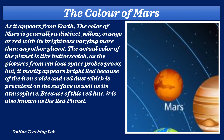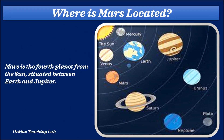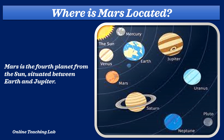Because of this red hue, it is also known as the red planet. Mars is the fourth planet from the sun, situated between Earth and Jupiter. As you can see in the picture, the nearest planet is Mercury, the second one is Venus, the third one is Earth, and the fourth one is Mars.